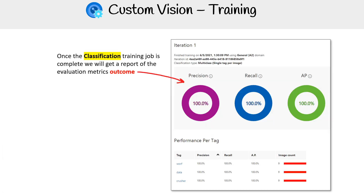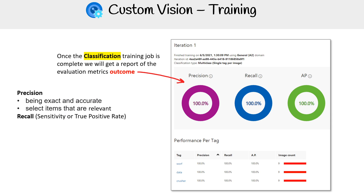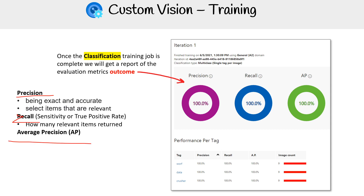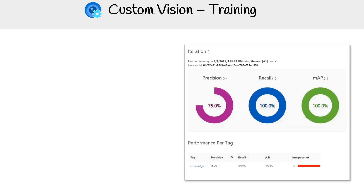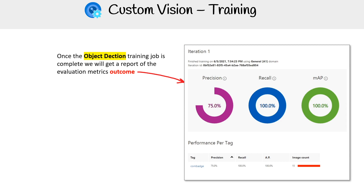When we get our results back, we're going to get some evaluation metrics. We have precision — being exact and accurate, selects items that are relevant. Recall — sensitivity, also known as true positive rate, how many relevant items are returned. And average precision. It's important that you remember these because they might ask you that on the exam. For object detection, the evaluation metric outcomes include precision, recall, and mean average precision.